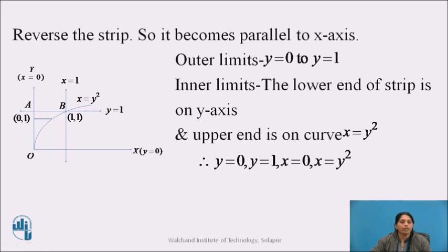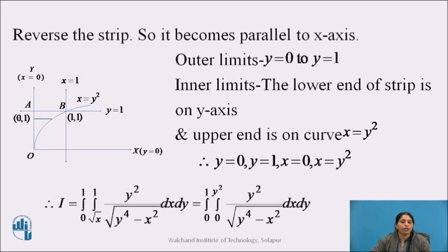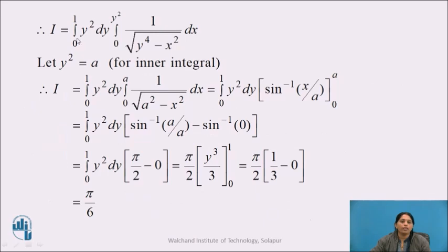Now we will evaluate the integral by this changed order. We can write the given integral I as integration from 0 to 1, integration from 0 to y², y² upon under root of (y⁴ minus x²), dx dy. The first integration is with respect to x, so we take the terms of y as constant and outside the integral: integration from 0 to 1 of y² dy, times integration from 0 to y² of 1 upon under root of (y⁴ minus x²) dx.